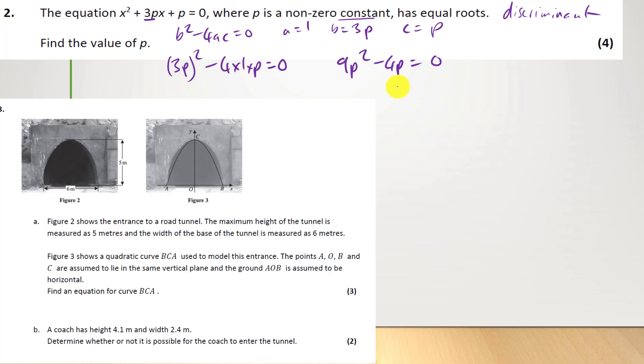Right, there's p in both terms. So we can just factorize p out. And have p(9p - 4) equals 0. So we've got p equals 0. But it can't be because it's a non-zero constant. So it's like this one. And then we're going to have 9p minus 4 equals 0. And we just solve for that, which is going to be 9p equals 4. And p equals 4 over 9. That's going to be our answer.